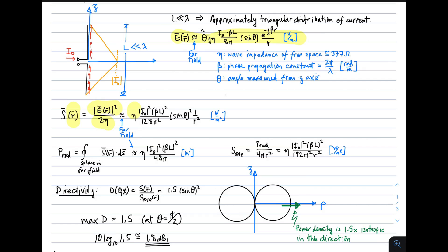And we find we get eta times the magnitude of the current squared, beta L squared, over 128 pi squared. Here's the pattern factor. Sine theta squared. And then 1 over R squared. Of course, we expect to see that 1 over R squared because we expect to see the inverse square law apply to spherical waves. And of course, the SI base units for power density are watts over meters squared.